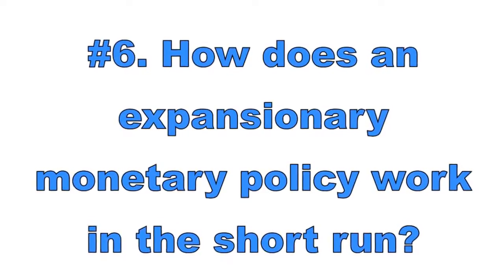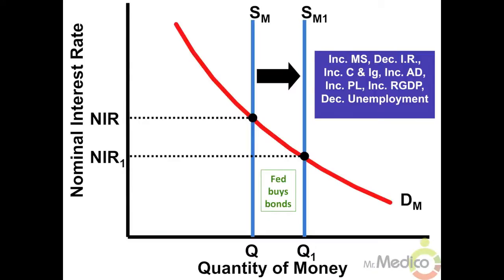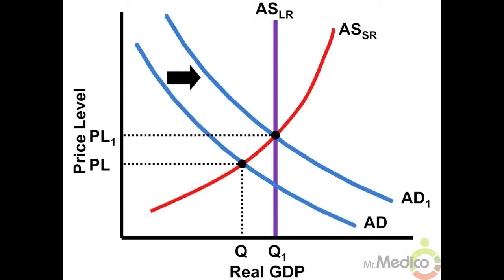Number six: how does an expansionary monetary policy work in the short run? An expansionary, or easy, monetary policy makes most sense during a recession. The Fed will buy bonds on the open market, decrease the discount rate, or decrease the reserve ratio. In the money market, this is represented by a rightward shift of the vertical money supply curve. This will reduce nominal interest rates and cause an increase in investment and consumer spending. As a result, aggregate demand shifts to the right: real GDP increases, price level increases, and unemployment decreases.